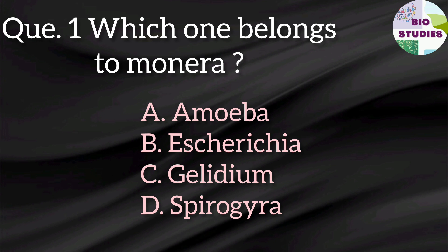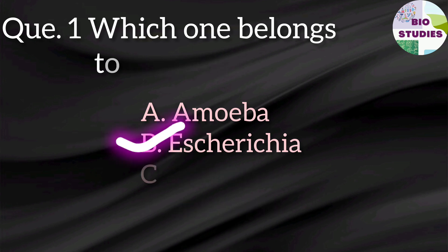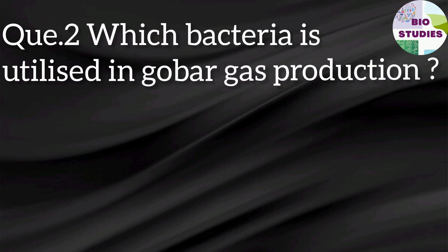The options are Amoeba, Asteraceae, Gelidium, or Spirogyra. Basically, in Kingdom Monera, bacteria are included. So we want to search for a bacteria in the options, and the right answer is Asteraceae, which is a type of bacteria.